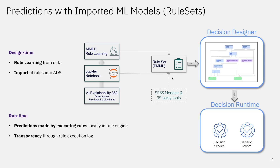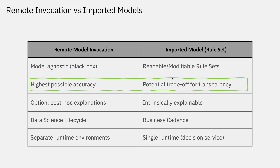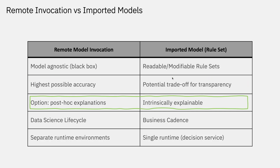There are some pros and cons for these approaches. At a high level, with remote model invocation, it's essentially model agnostic — you can use any model type you want, and it basically appears as a black box. Versus the imported rule sets, where those rules are readable and modifiable inside ADS. The lack of constraint in using any machine learning model type gives you the highest possible accuracy for remote model invocation. By contrast, representing the machine learning model as a rule set is a potential trade-off of transparency over accuracy. When it comes to explainability, for a black box model you can use some type of post-hoc explainability method — meaning, along with your prediction, you can return some explanation. For imported rule sets, they are intrinsically explainable because they are readable rules.